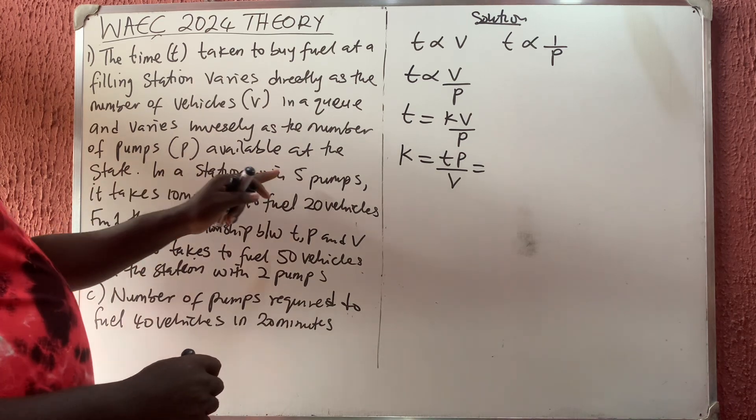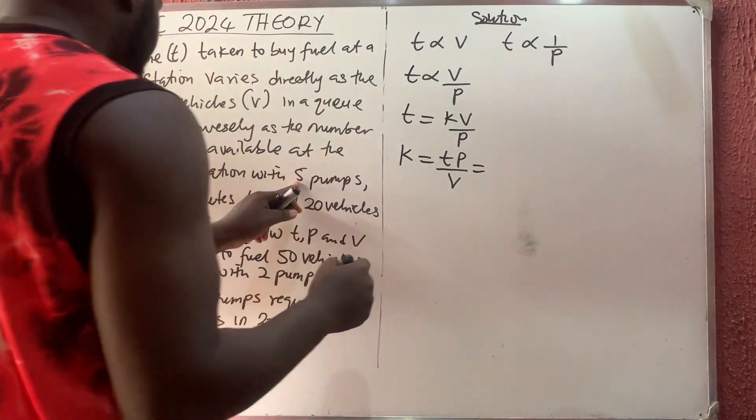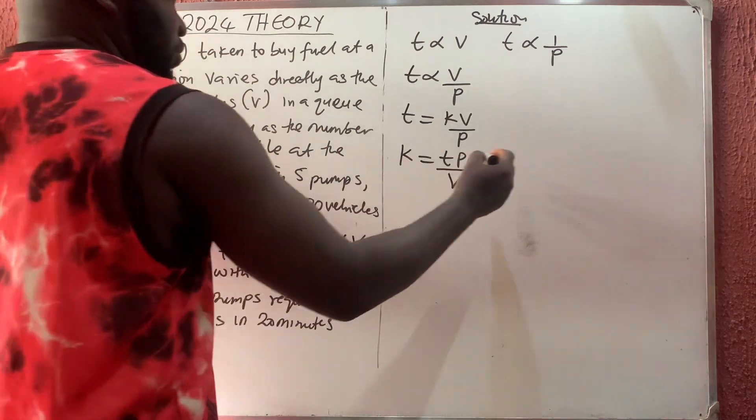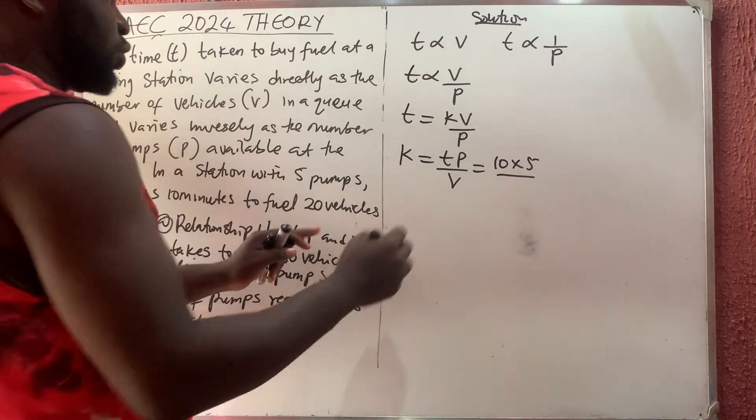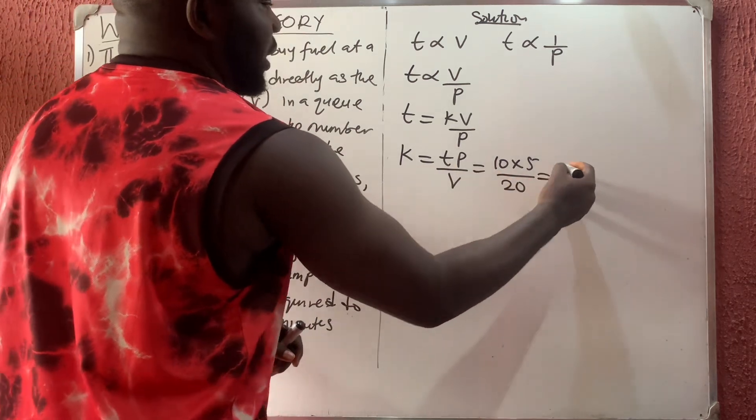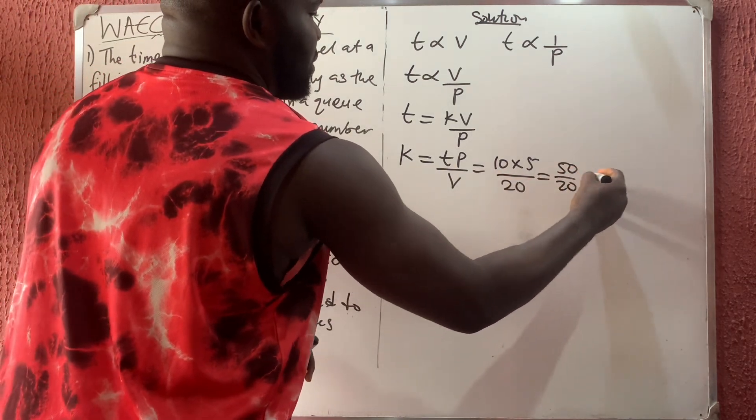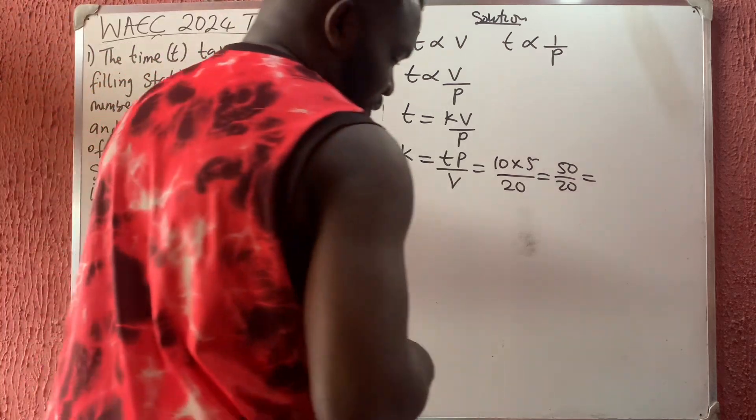My p here is 5, then 10 minutes, so I would say 10 times 5 all over how many vehicles, 20 vehicles. So that is 50 over 20, which equals 2.5.